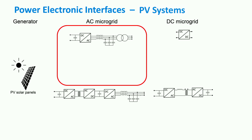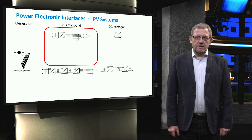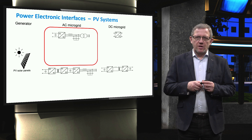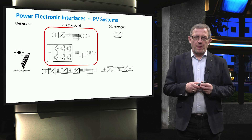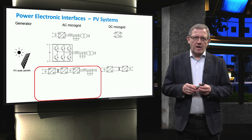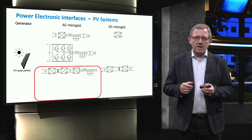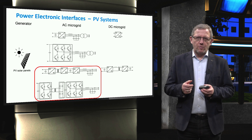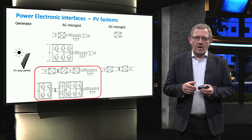This figure shows different possible power electronic interfaces for PV systems. To connect a photovoltaic unit to an AC microgrid, first it is required to invert the input DC voltage to three-phase AC using a common three-phase inverter. Then the three-phase voltage can be stepped up using a transformer, which is usually expensive and bulky. To eliminate the bulky transformer, it is possible to use a smaller high-frequency transformer, which also provides isolation. However, to do so, it is needed to increase the conversion steps: first from DC to AC, and then from AC to DC through a diode bridge. The high-frequency transformer is placed between these two converters. Finally, the DC voltage output of the diode bridge is inverted back to AC.